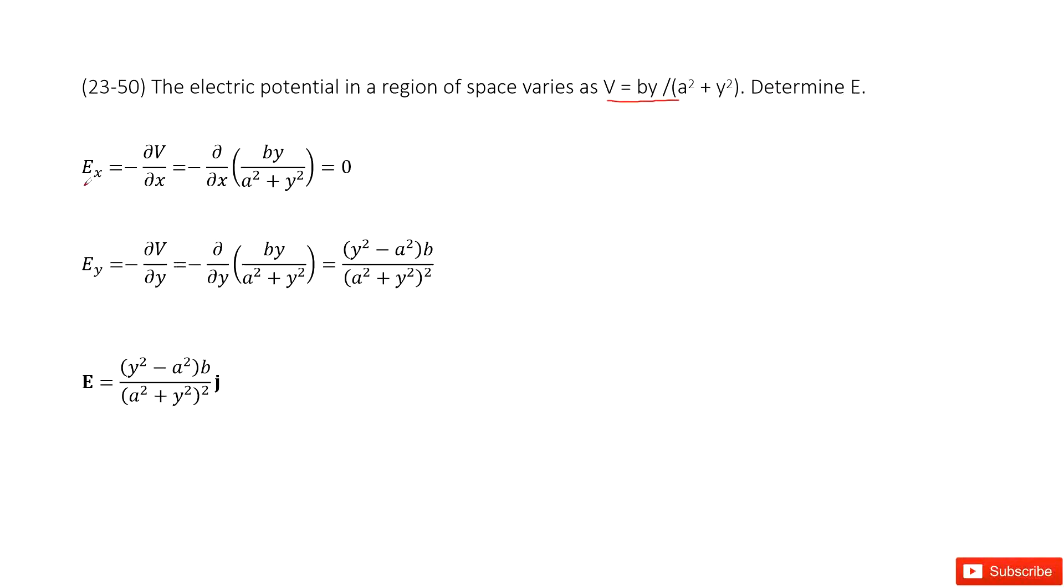So the x-component Ex equals negative partial derivative of the potential over x. So we input the V inside, we get the answer there. That means the x-component electric field is zero.